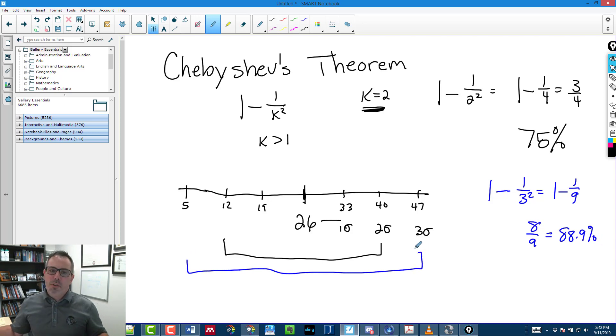So three standard deviations is 88.9%. Now, those are probably two numbers you're going to see, but I don't have to use exact numbers. I can say, what about, what if k was equal to 1.5?